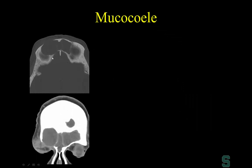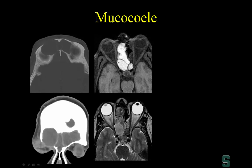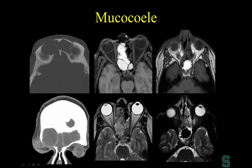Another mucocele example shows complete opacification of the frontal sinus with expansion and thinning of the anterior and posterior walls. A mucocele can involve the middle and posterior ethmoid air cells and sphenoid sinus. Importantly, a sphenoid mucocele may appear very dark on T2, which is why I'm cautious about commenting on sinuses on brain MR — chronic disease with ferromagnetic accumulation of heavy metals can cause signal loss, making opacified sinuses look aerated.